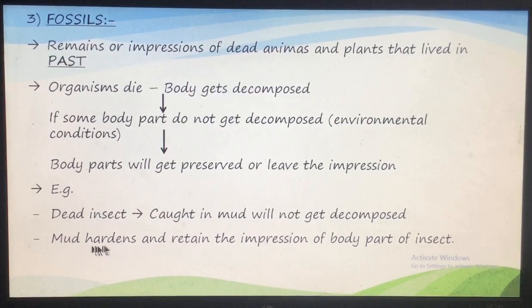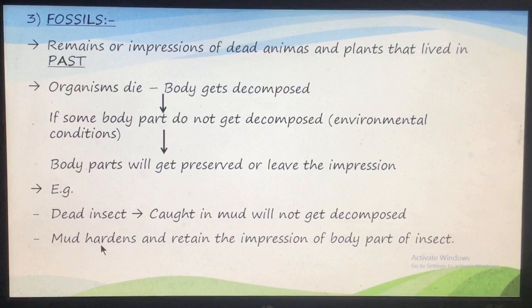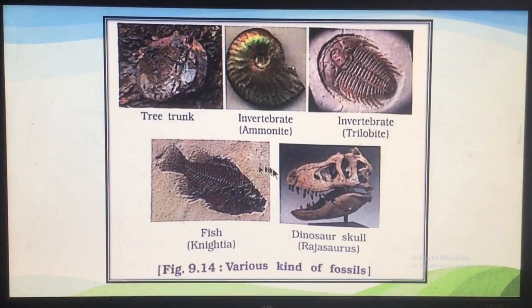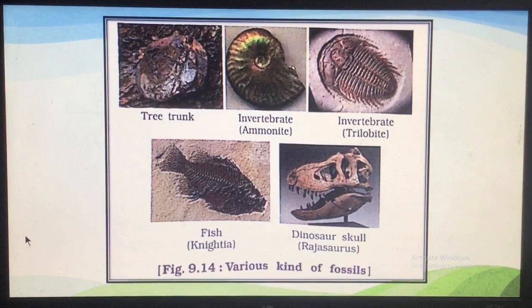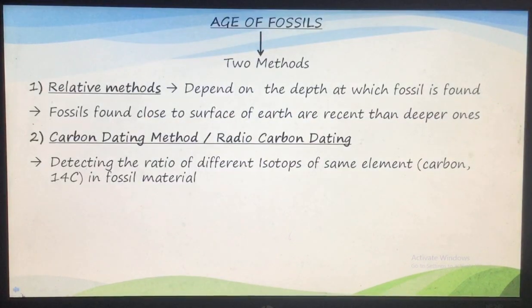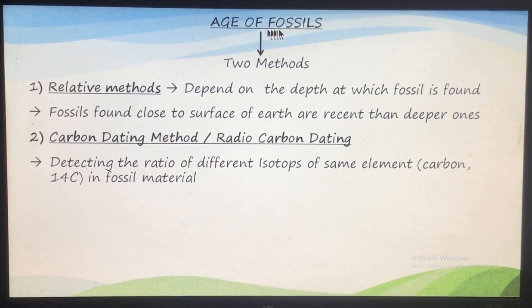And the mud forms stone. The impression of the body of that insect is retained and gives rise to a fossil - this is what a fossil is. There are various kinds of fossils - a tree trunk, invertebrates, trilobites, fish fossils, and the skull of a dinosaur. These are shown to tell you the various kinds of fossils. We can also find out the age of a fossil.